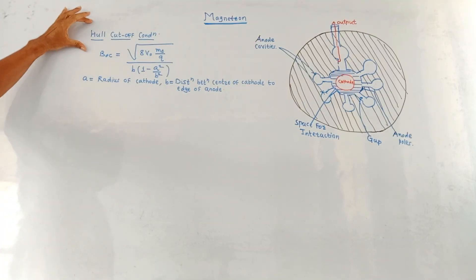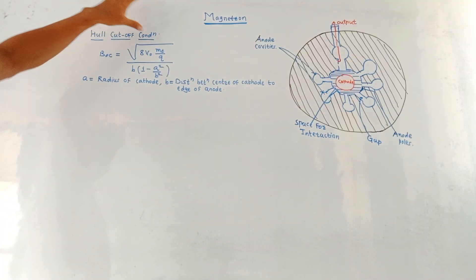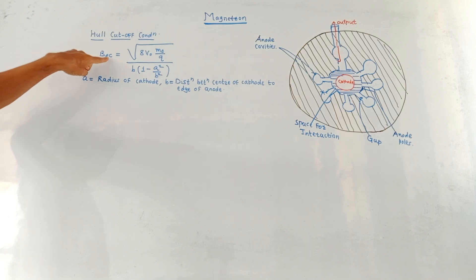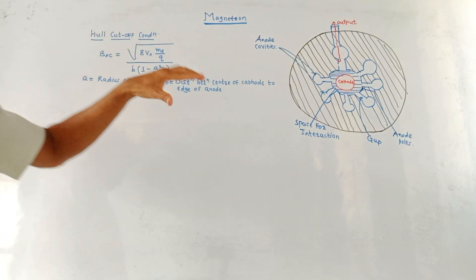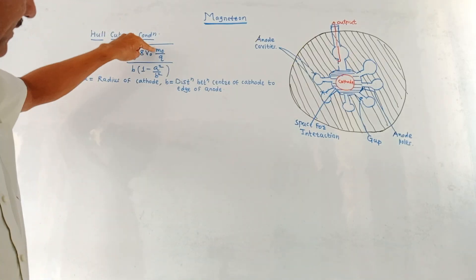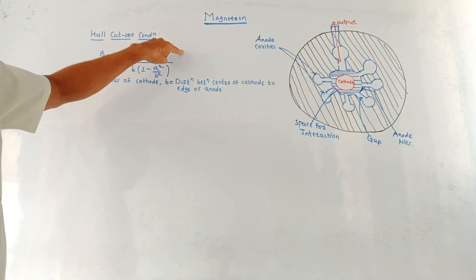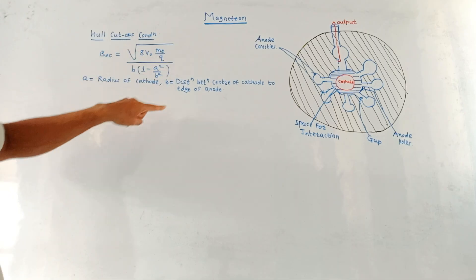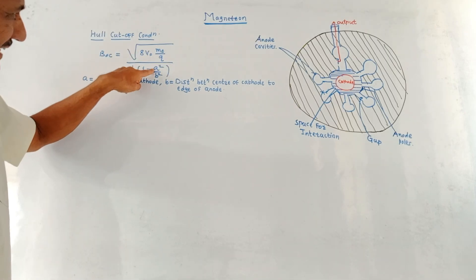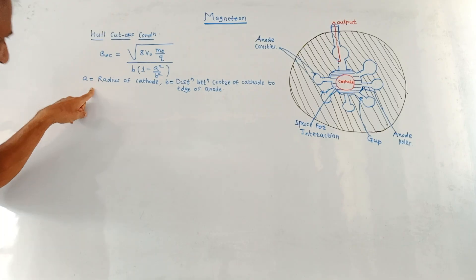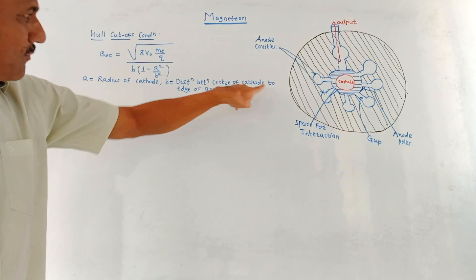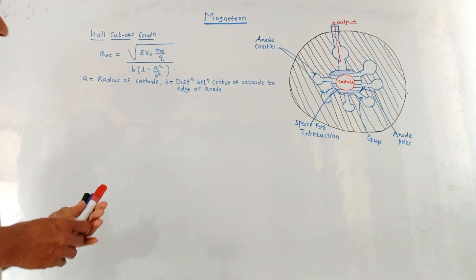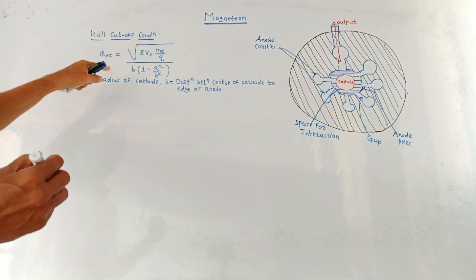There is one particular condition called the Hull cutoff condition. It is given by B₀c = square root of (8V₀ · mₑ / qₑ) divided by b·(1 − a²/b²), where V₀ is the voltage applied between anode and cathode, mₑ is the mass of the electron, qₑ is the charge of the electron, a is the radius of the cathode, and b is the distance from the center of the cathode to the edge of the anode.